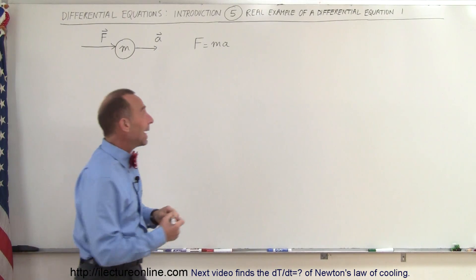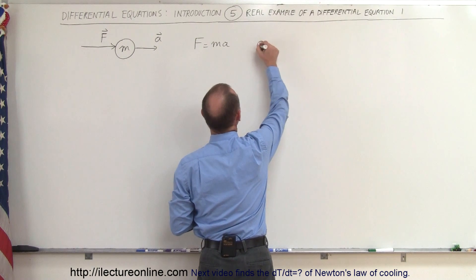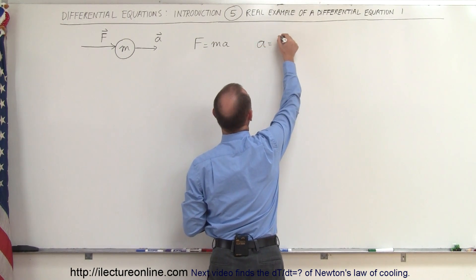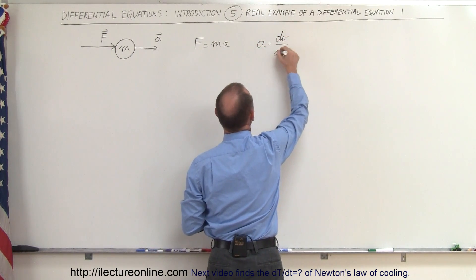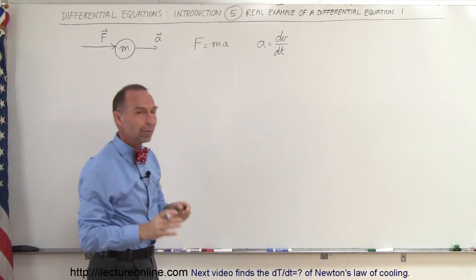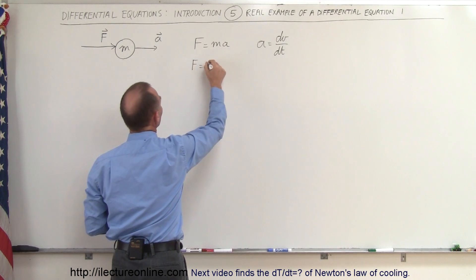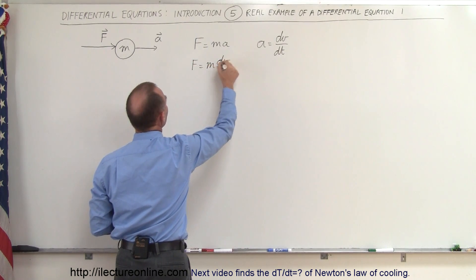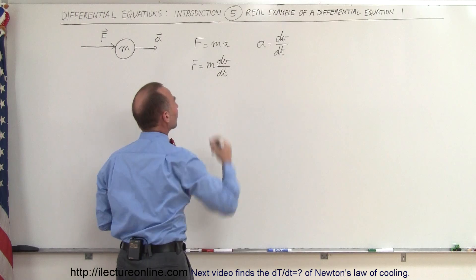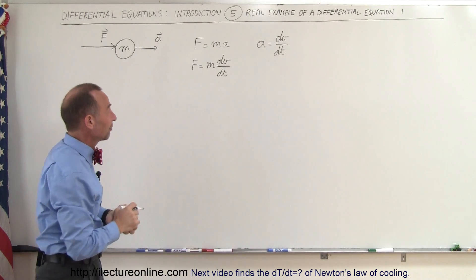But we realize that a could be written as a differential of the velocity. So this could be written as dv/dt, the change in velocity with respect to time. And if we plug that in for a right here, this now becomes f equals m times dv/dt, which then in itself becomes a differential equation. That is what we call a differential equation.